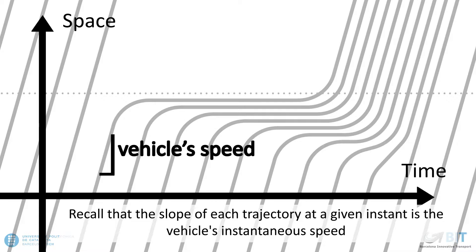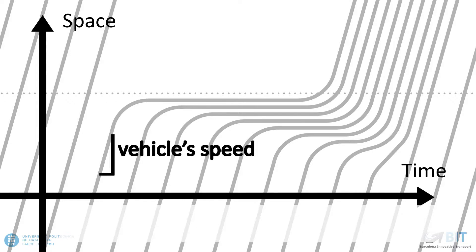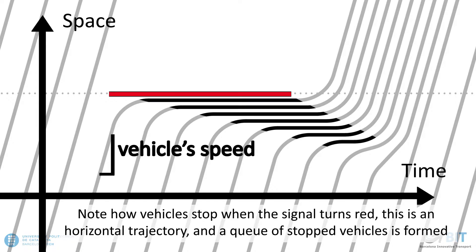Recall that the slope of each trajectory at a given instant is the vehicle's instantaneous speed. Note how vehicles stop when the signal turns red. This is a horizontal trajectory, and a queue of stopped vehicles is formed.